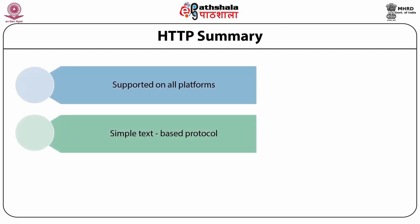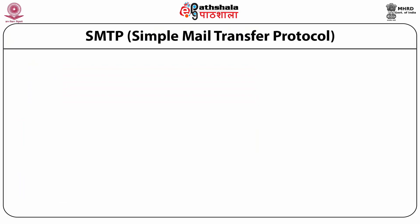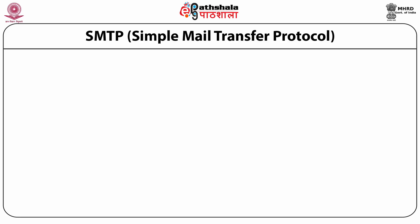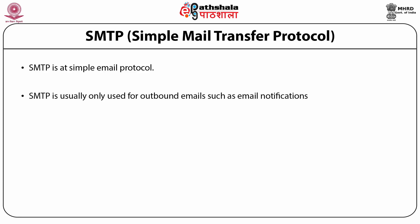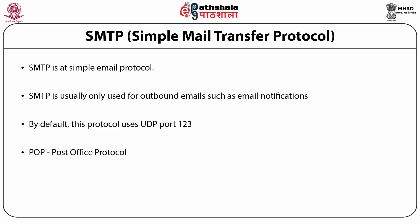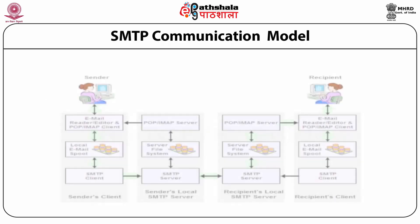The other protocol is SMTP — Simple Mail Transfer Protocol. As HTTP is used for web pages, SMTP is used for email. It is usually used for outbound emails, such as email notifications. By default, this protocol uses UDP. You can use POP3 or IMAP — Internet Message Access Protocol — in your mail client to read mails from the mail server.